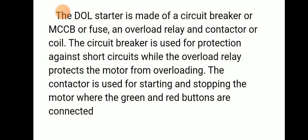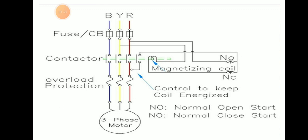This direct online starter is made of a circuit breaker, MCCB, or fuse to prevent the overload relay and conductor or coil. The circuit breaker is mainly used for protection against overcurrent. The overload relay protects the motor from overloading, and the contactor is used for starting and stopping the motor, where the green and red buttons are connected.